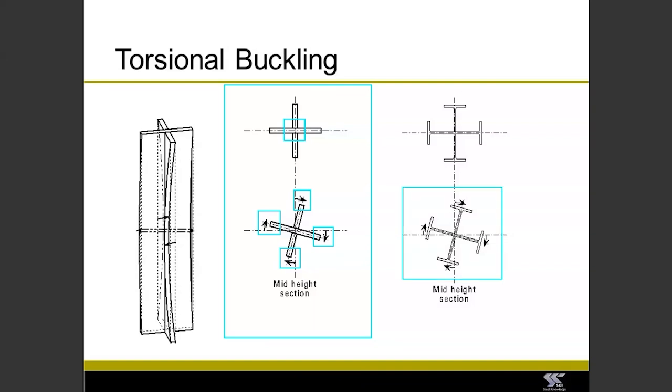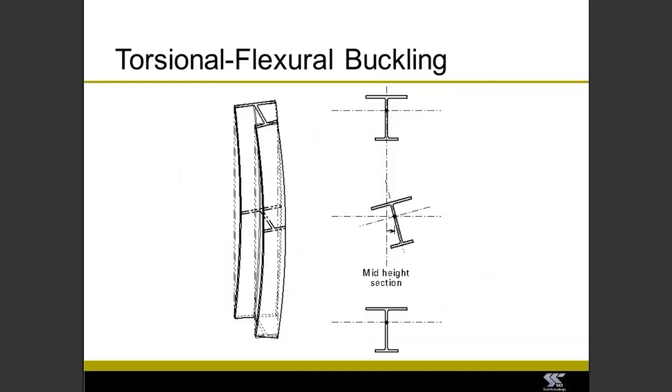Now these aren't the typical light gauge members, but you can imagine with a lipped C, it's not a million miles away from this, and you can get some torsional buckling occurring. Maybe not pure torsional buckling, maybe it's combined with a little bit of flexural buckling, and so we need to check that sort of condition as well, conveniently termed torsional flexural buckling.